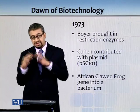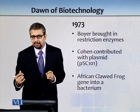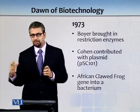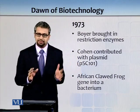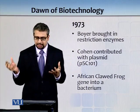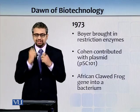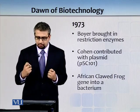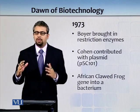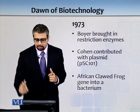In nature, plasmids have various functions, but in genetic engineering they have been used to give antibiotic resistance to various strains so we can isolate and use them. Using plasmid PSC-101, they introduced a gene from an African clawed frog into a bacterium — the first major breakthrough where a gene from another species was cloned into a bacterium.